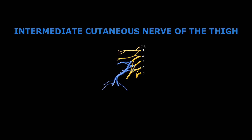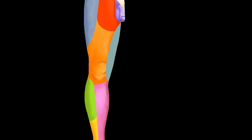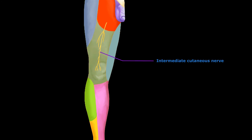The fourth nerve is the intermediate cutaneous nerve of the thigh. This is a branch of the anterior division of the femoral nerve. It divides into two or more branches and supplies a strip of skin on the front of the thigh extending from the sartorius to the knee.